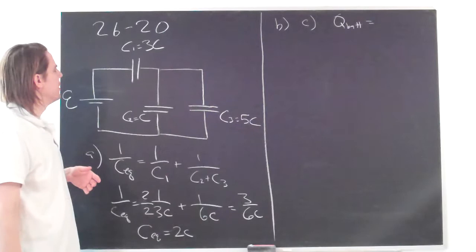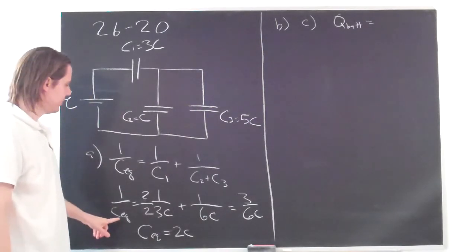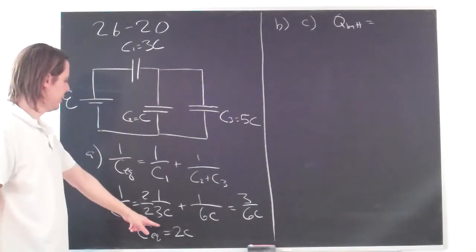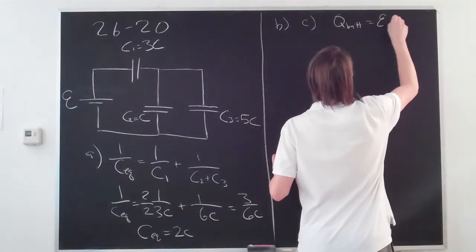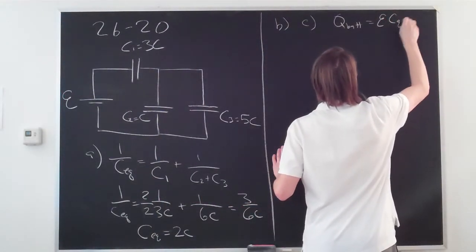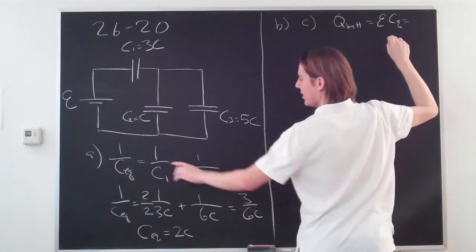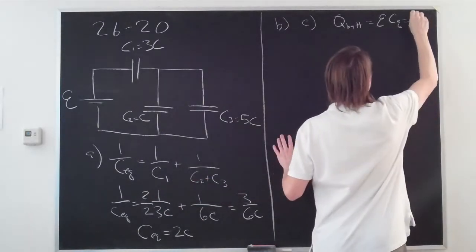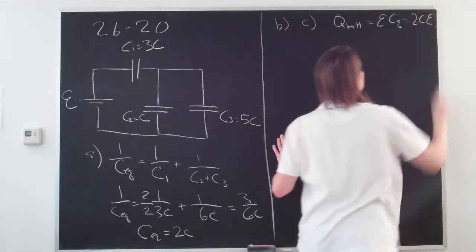So QBAT is just the equivalent capacitance times the EMF. So it's always just the EMF times the equivalent capacitance. Or in this case, it's 2C times the EMF. 2CE.